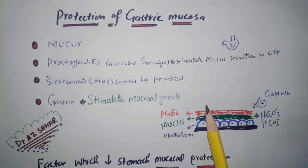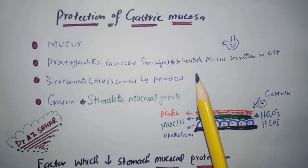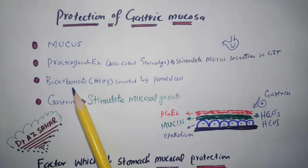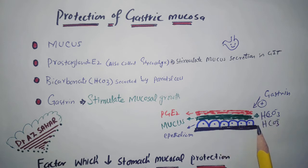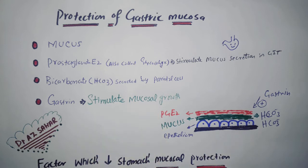We are protecting the mucosa of the stomach from acidity. The first protection is mucus, the second is prostaglandin E2 (glycocalyx) — its function in the gastrointestinal system is to stimulate the secretion of mucus, which then protects the mucosa. The third is bicarbonate (HCO3), secreted by parietal cells — it attaches to H+ and becomes H2CO3, protecting the mucosa from acidity. The fourth is gastrin, secreted by G-cells, which stimulates mucosal growth.